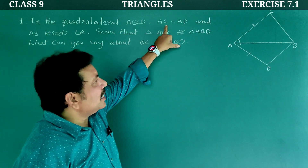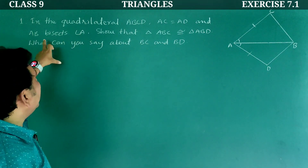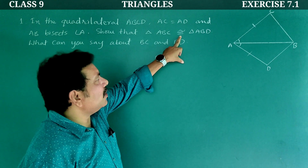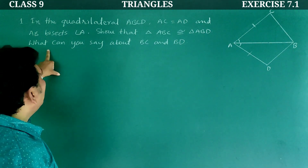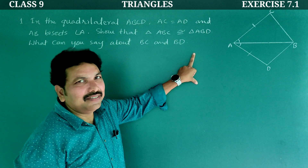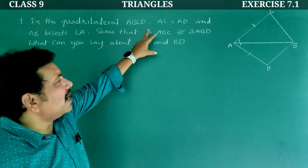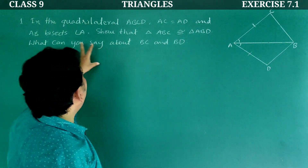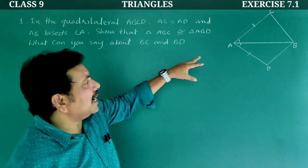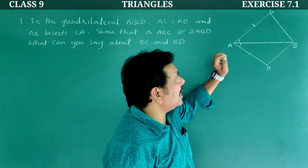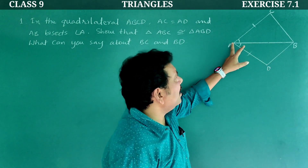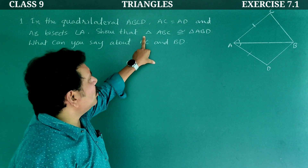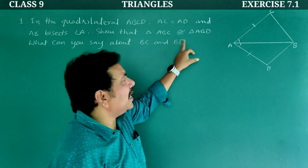This is the first question. In the quadrilateral ABCD, AC is equal to AD and AB bisects angle A. Show that triangle ABC is congruent to triangle ABD. AB bisects angle A, which means angle BAC is equal to angle BAD. What we have to show: triangle ABC congruent to triangle ABD.